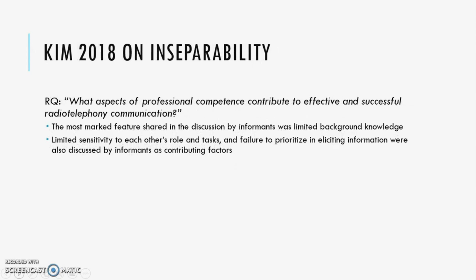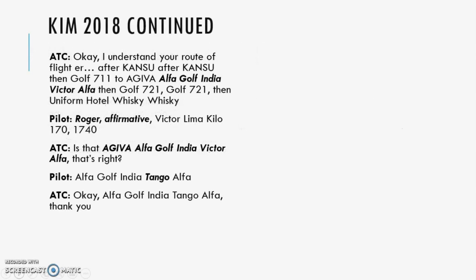As an example, Kim in 2018 asked: what aspects of professional competence contribute to effective and successful radio telephony communication in aviation? In an aviation English example, an air traffic controller, responding to a pilot's request to change a route of flight, read back the route including waypoints: after Khonsu, then Gulf 7-1-1 to Agiva — Alpha Gulf India Victor Alpha — then Gulf 7-2-1, then Uniform Hotel Whiskey Whiskey.